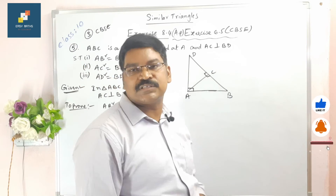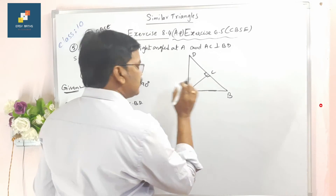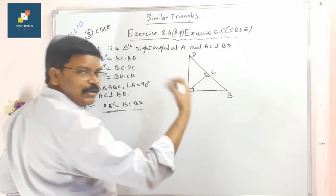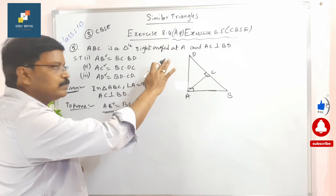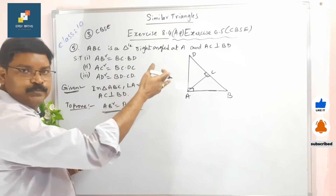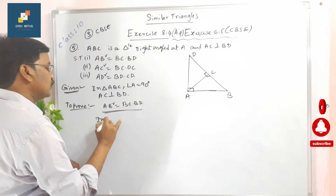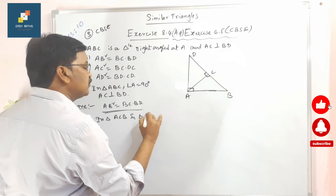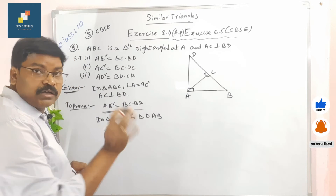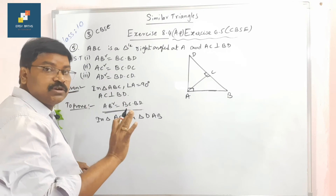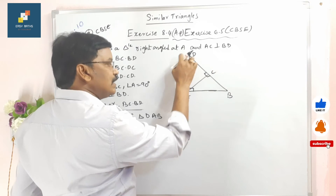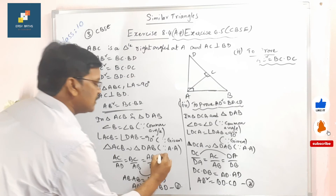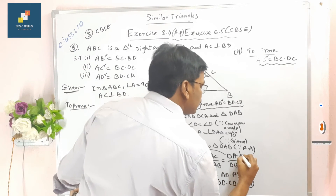This is the second equation of Pythagoras theorem. To prove this, we will take two triangles, the same process as in the previous sum — triangle ACB and triangle DAB. We must maintain the order: A, C, B and D, A, B. Let equation 3 be triangle ACB similar to triangle DAB, and equation 4 be triangle DCA similar to triangle DAB.